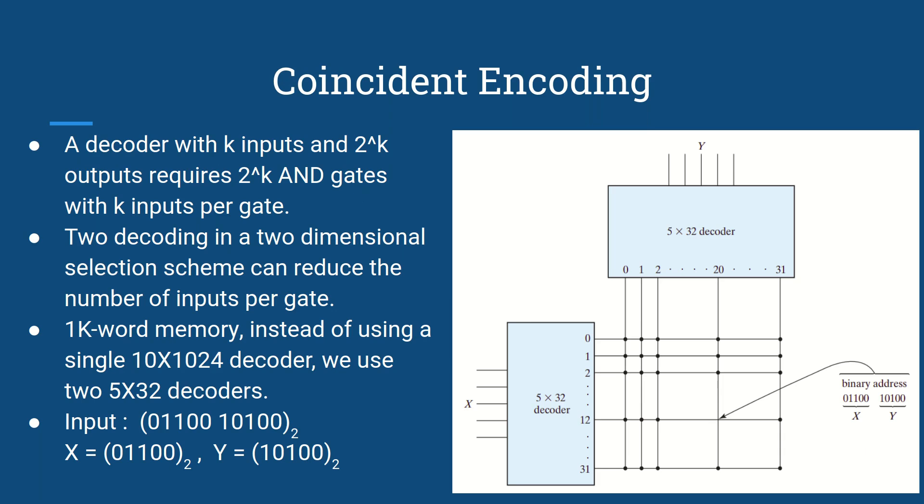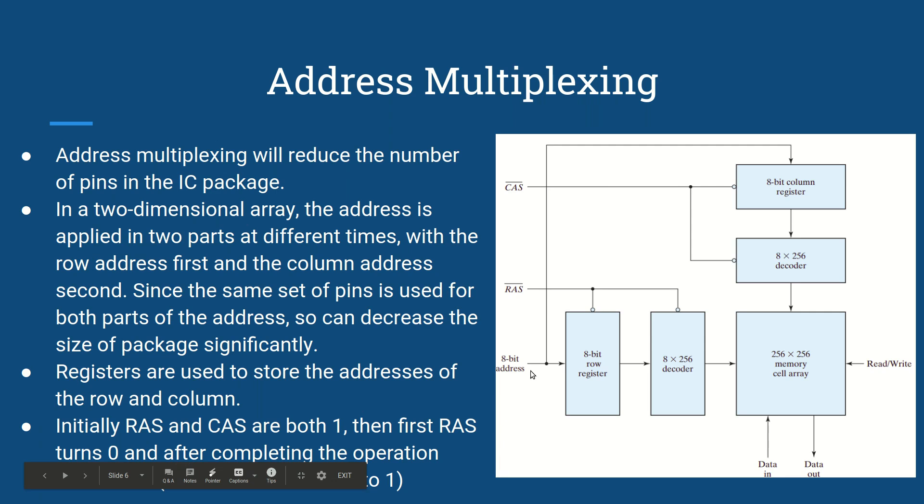You see, to read the input we have k/2 ICs here and k/2 ICs here, so total we have k ICs. But we can further reduce it by combining both of these inputs to a single source like here and using original k/2 ICs. To differentiate whether we are doing a row selection or column selection, we have used two new variables RAS and CAS.